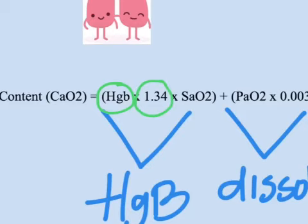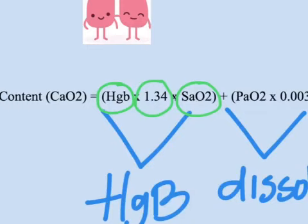1.34 is the second factor. This is a constant and refers to the amount of oxygen carried by 1 gram per deciliter of hemoglobin when fully saturated or bound by oxygen. The third factor is important because we know that not all hemoglobin is bound by oxygen. So your SaO2 refers to the percent of hemoglobin bound by oxygen in the arterial blood. This is something we measure indirectly with an SpO2, or oxygen saturation.